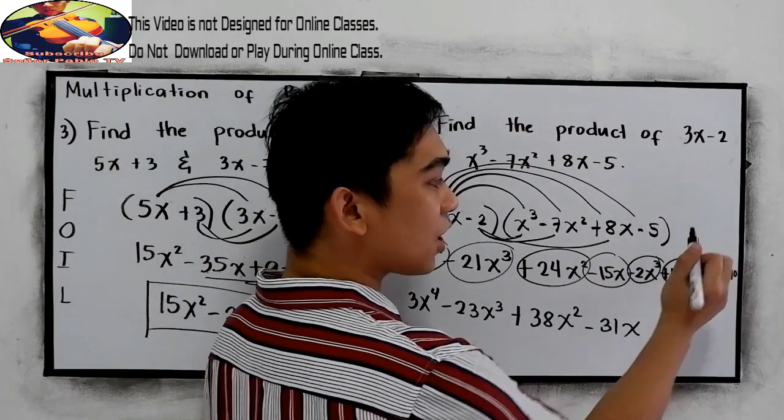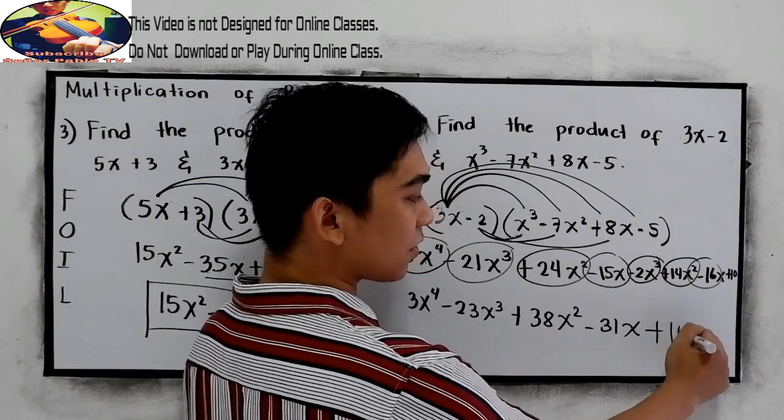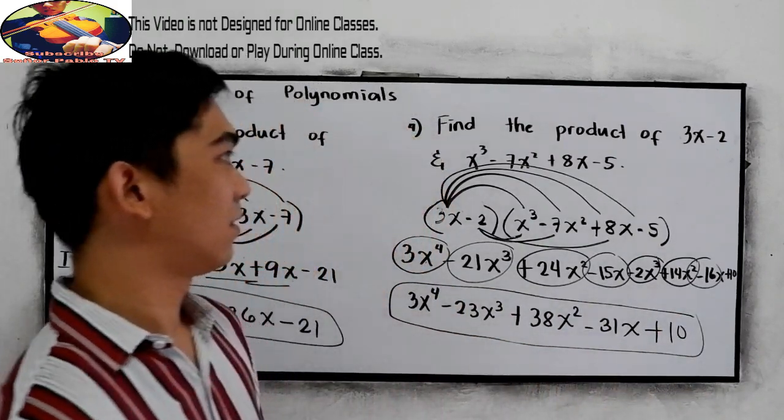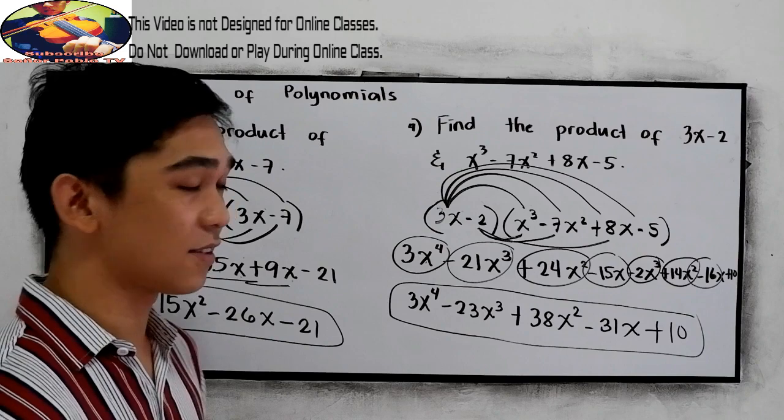And for the constant term, just copy, positive 10. This will be the product and your answer.